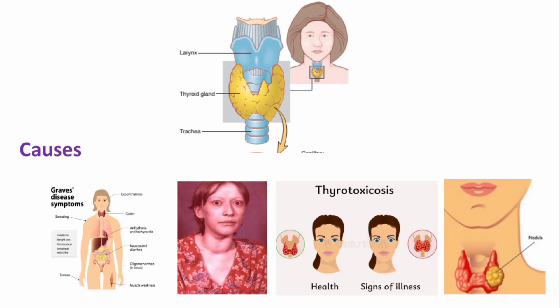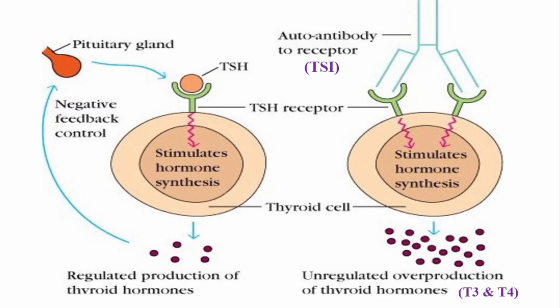In toxic goiter, the gland size increases two to three times normal and hormone secretion is increased five to fifteen times. The most common cause of hyperthyroidism is Graves' disease, which is an autoimmune disease in which thyroid stimulating immunoglobulins (TSIs) are formed and they act on the TSH receptors present on the thyroid gland.